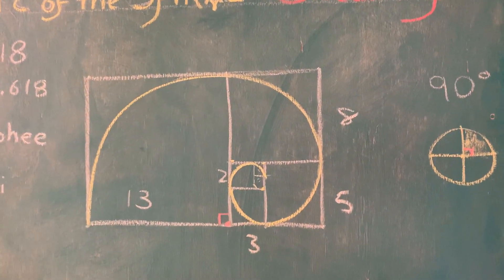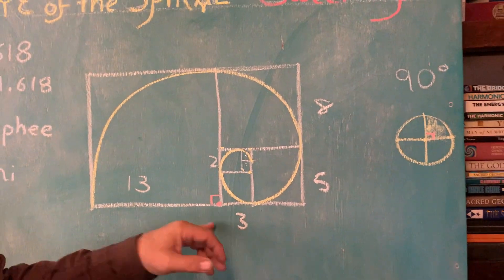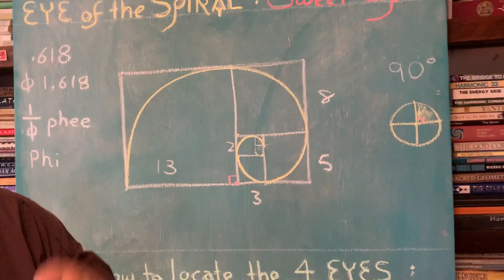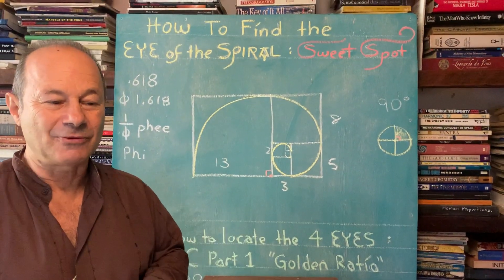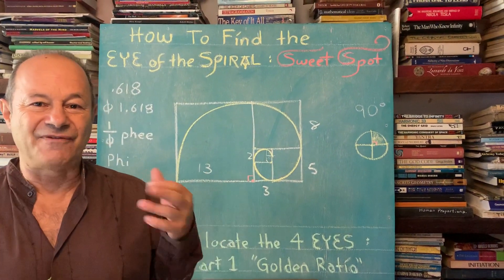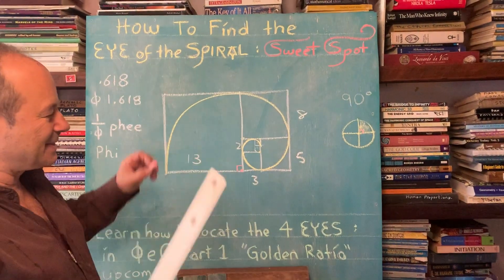So the ancient geometers evolved like Plato, Pythagoras, and even well before in Egypt and India, they knew where the eye of the spiral was. This is the wormhole, the physics of time bending.